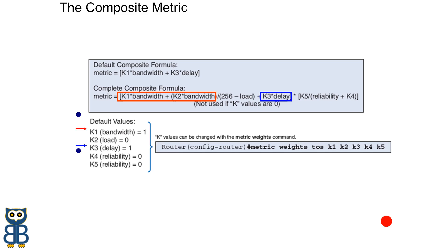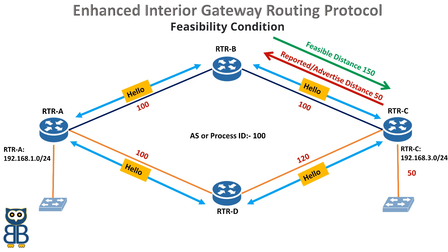If you look at a real EIGRP router, you'll see the numbers are very high and a bit annoying to work with. Router C will advertise to Router B its metric towards the destination — Router C is saying to Router B that it costs a metric value of 50 to reach the destination network 192.168.3.0. This is called the advertised distance, or the reported distance. Router B has a topology table, and in that topology table it will save this metric value. The advertised distance to reach the destination network is 50 from Router B.